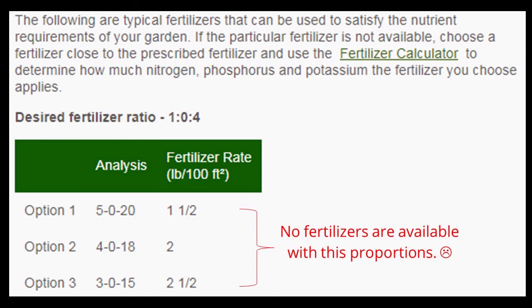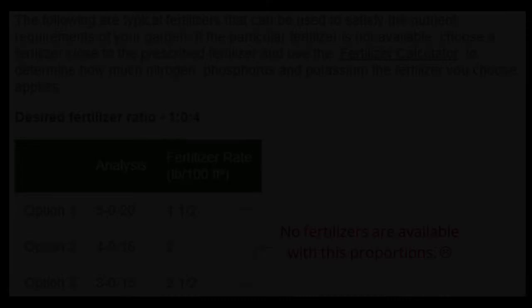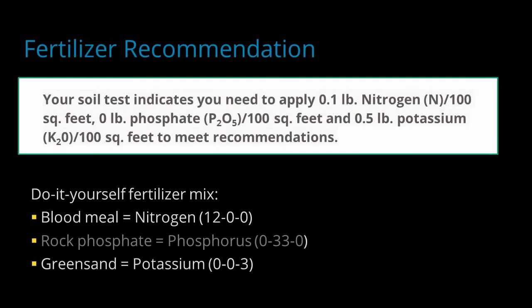Unfortunately, no fertilizers are available with these proportions because the amount of potassium that needs to be added is so large. This is when we had to break out the calculator. We decided that we could apply two different soil amendments. We selected blood meal to provide the necessary nitrogen, and green sand to provide the necessary potassium. We didn't need to add any phosphorus to our soils, but if we did, we could have used a material like rock phosphate.